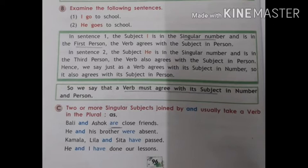Hence we say, just as a verb agrees with the subject in number, so it also agrees with its subject in person. There is agreement of verb with its subject in number as well as in person. We say that a verb must agree with its subject in number as well as in person.